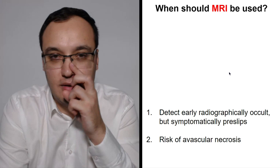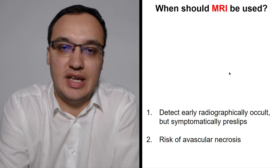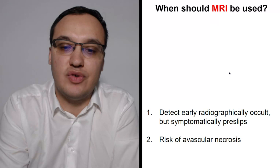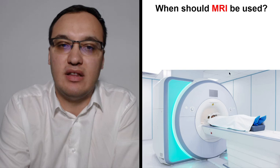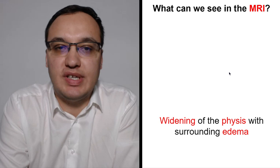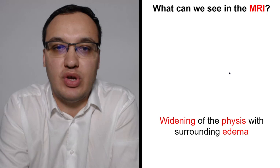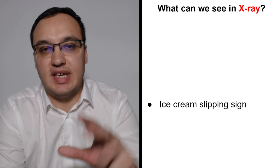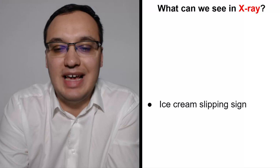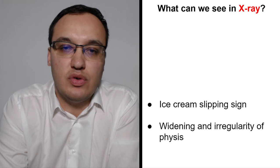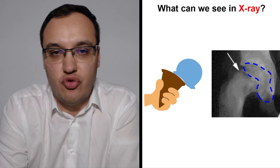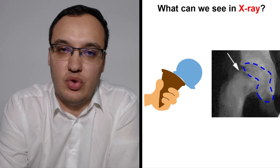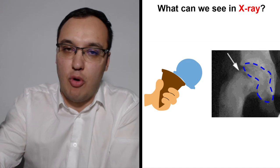A second reason to use MRI is the risk of avascular necrosis — total destruction of the bone due to absent blood supply, which is very dangerous. On MRI we can see widening of the physis and surrounding edema. Another classic X-ray finding is the ice cream slipping sign — the epiphysis appears to be slipping off the femur like a scoop of ice cream falling off a cone.